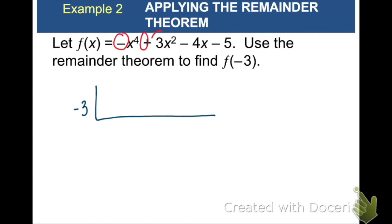Next, we need our coefficients. Remember, we're going to use 0 for the x to the third coefficient. And now we can go ahead and do our synthetic division. So bring down the negative 1, multiply, add down, multiply, add down. And we end up with negative 47.